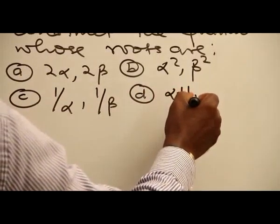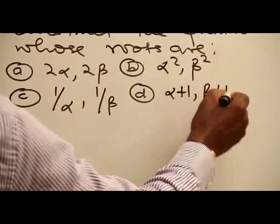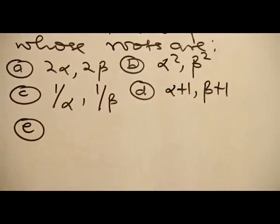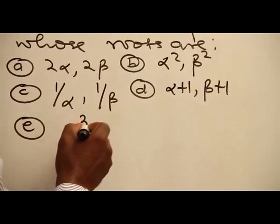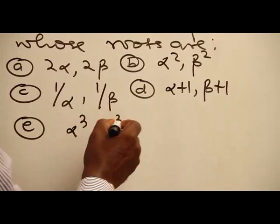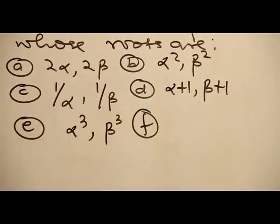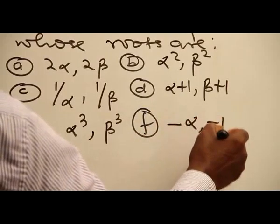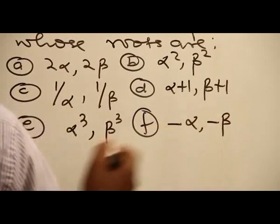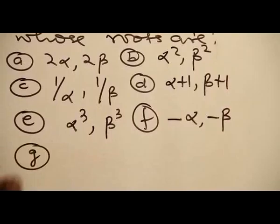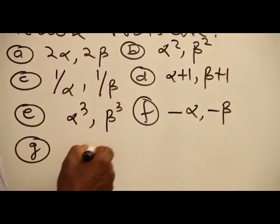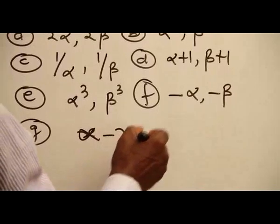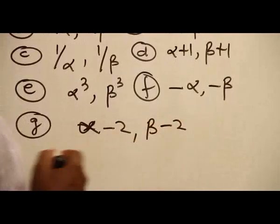D. Alpha plus 1, beta plus 1. E. Alpha cubed, beta cubed. F. Minus alpha, minus beta. G. Alpha minus 2, beta minus 2.